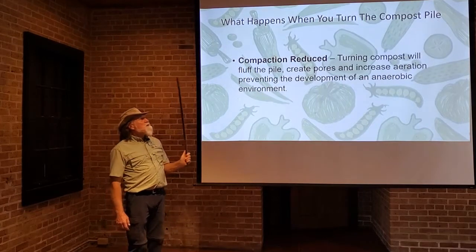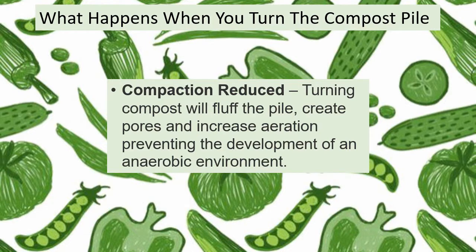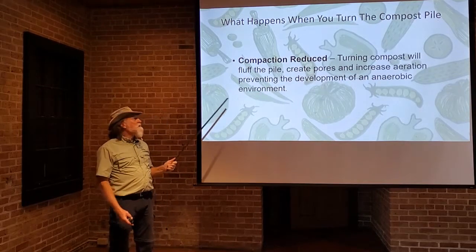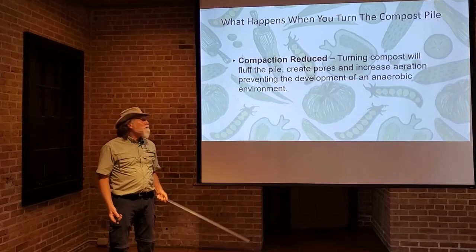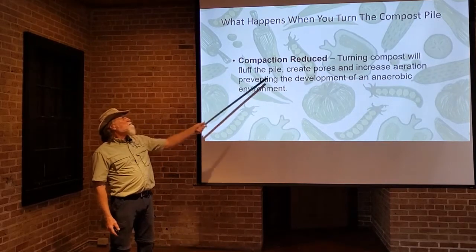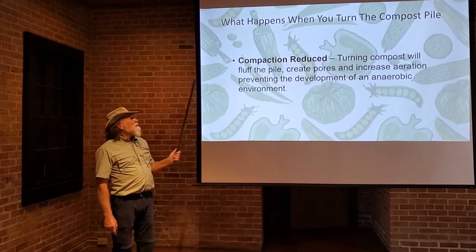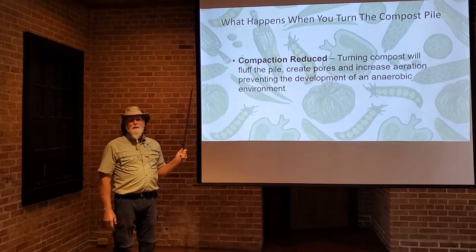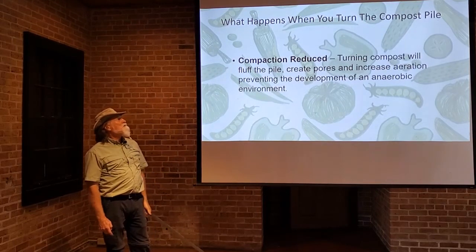When you turn the compost pile, one thing you do is reduce compaction. Remember how much more compacted the material is at the bottom of the pile compared to the top? By turning it, you're creating more pore space, increasing aeration, and preventing compaction from happening. You prevent the pile from developing an anaerobic environment due to compaction.